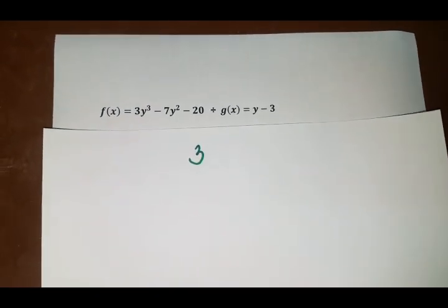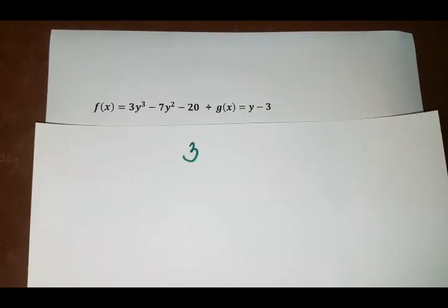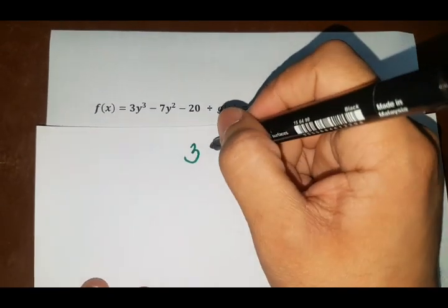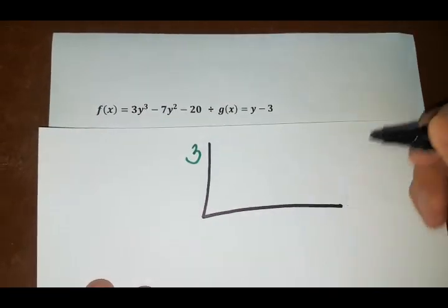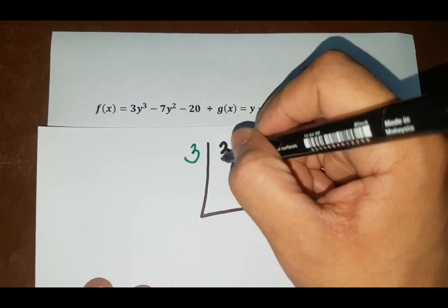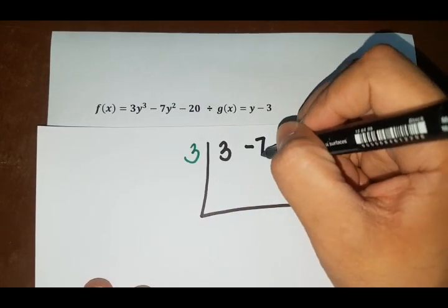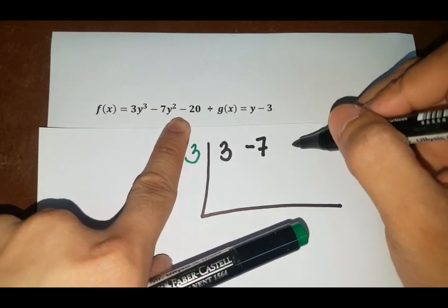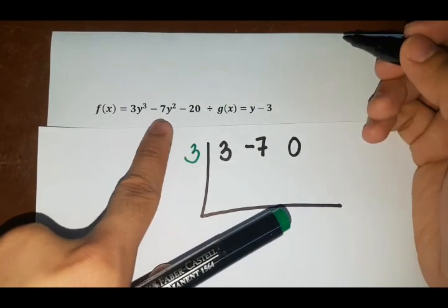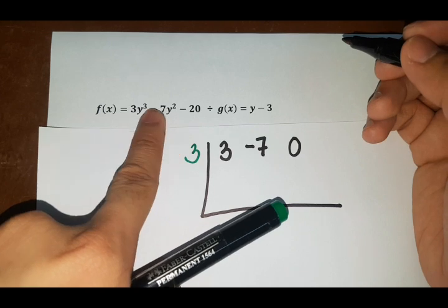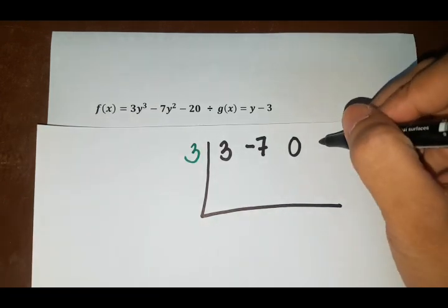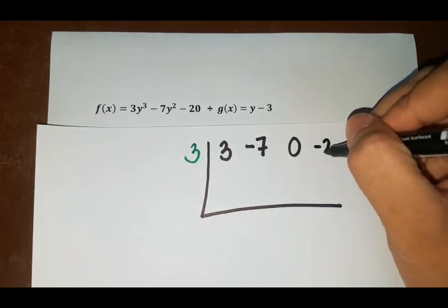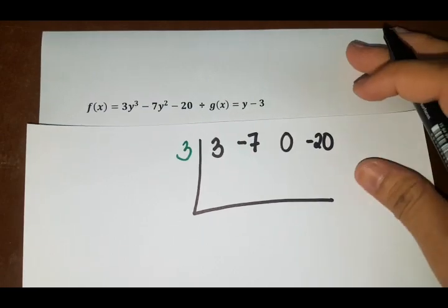Next. So get the coefficients. So we have 3, negative 7. So our coefficient for y is 0. So don't forget that. Okay. So to complete the order of our polynomial, so next we have negative 20. Okay.